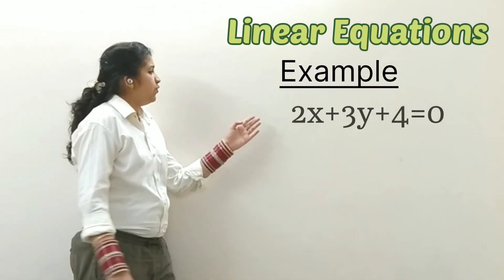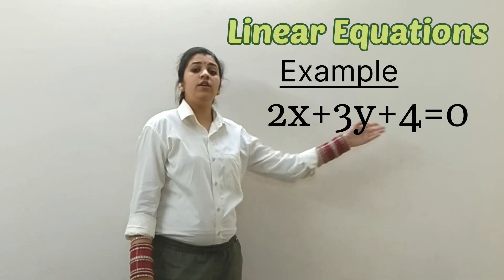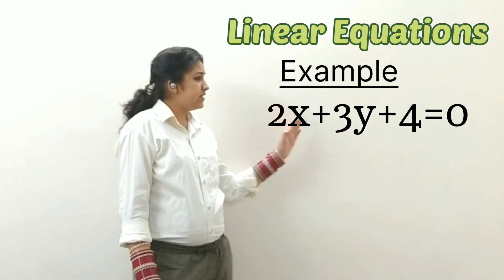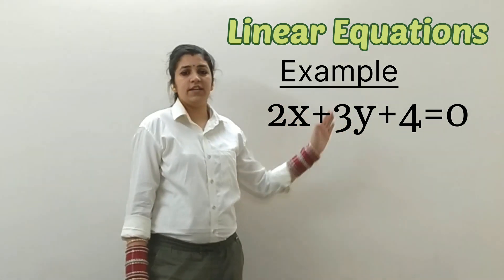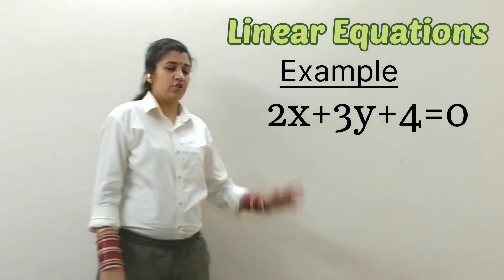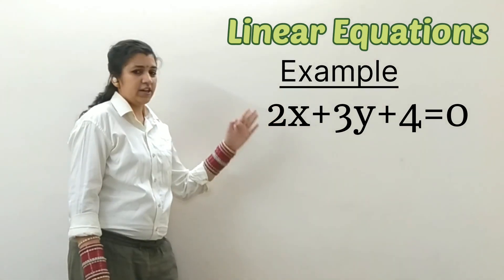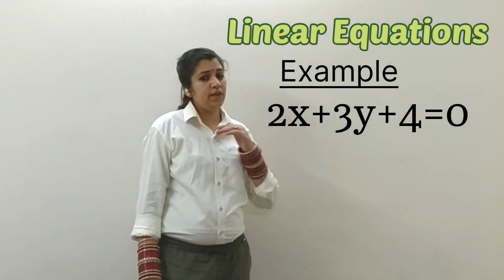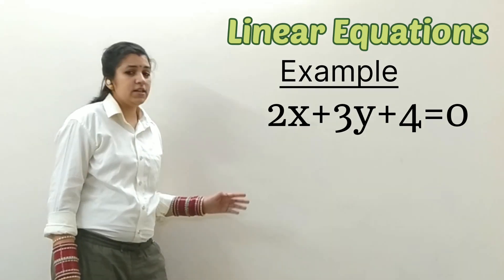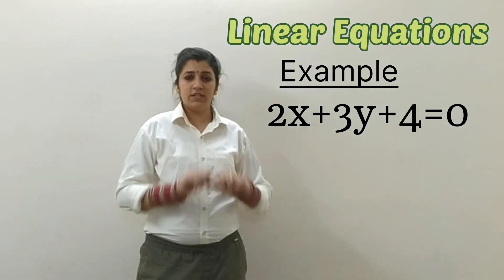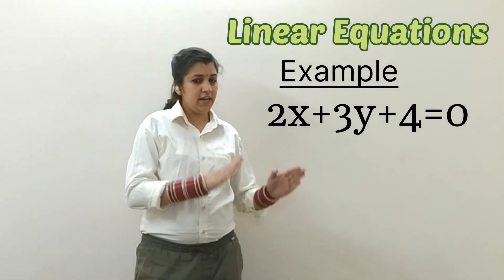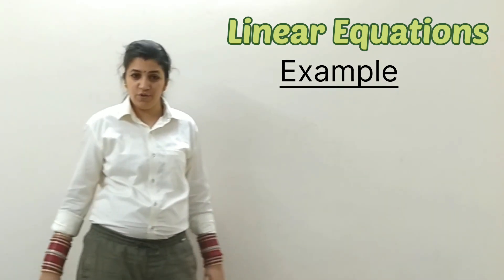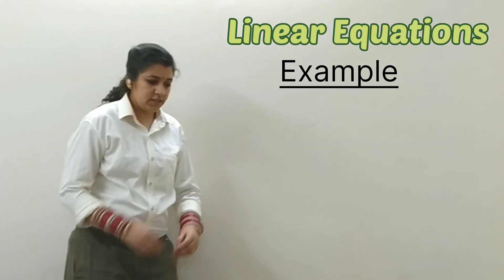So, 2x plus 3y plus 4 is equals to 0. Here, x and y — there are two variables. So this equation is actually a linear equation in two variables. This was about the difference between linear equation in one variable and linear equation in two variables.